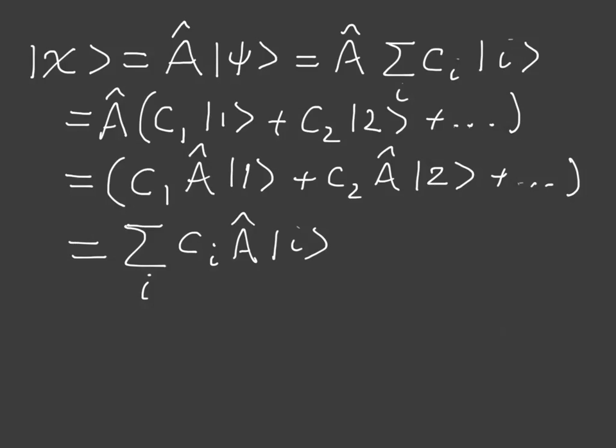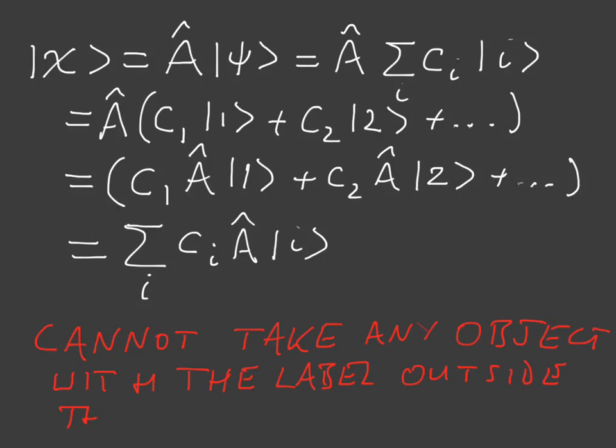So you see that we can bring A inside the sum, but we cannot take anything with the index of the sum outside it. This is a very important point, which is frequently misunderstood. And I'm just going to write this in red. We cannot take any object with the label, and that is the index, the I, outside the sum. That's a very important point to hold on to.